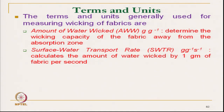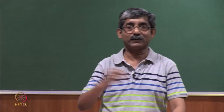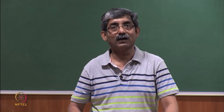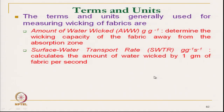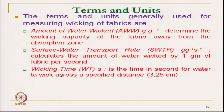Surface water transport rate, SWTR, is in grams per gram per second, calculated based on the amount of water wicked by 1 gram of fabric per second. Wicking time is the time in seconds for water to wick across a specified distance — here the distance is 3.25 centimetres, a fixed distance. For comparison, one can take any of these values.